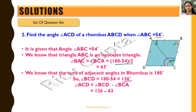Alternatively, we know that the diagonal in a rhombus bisects the angles. So if the total angle BCD is 126 degrees, the diagonal bisects it, giving angle ACD = 63 degrees. So these are two ways of doing it.